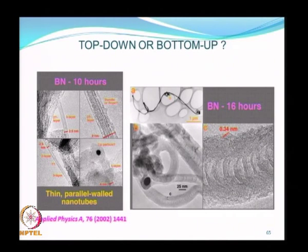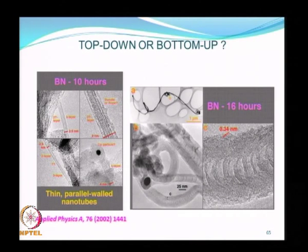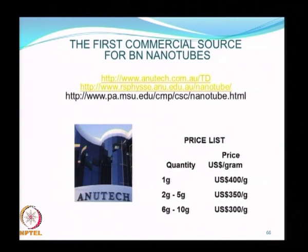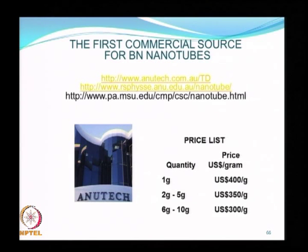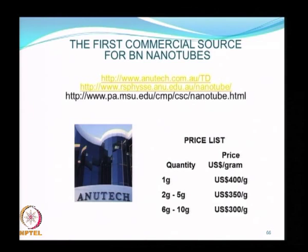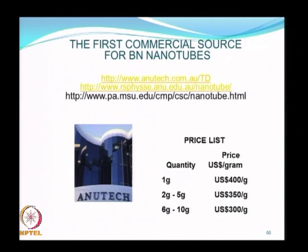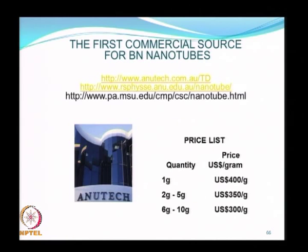Boron nitride nanotubes can be produced using this combined process; the nanostructure resulting after 10 hours and 16 hours of processing can be seen in TEM images. High energy ball milling combined with thermal annealing was in fact the first commercial process used for production of boron nitride nanotubes. Cost-wise, this is very competitive with bottom-up approaches—prices are listed per gram of material—and making the same materials using a bottom-up process could cost at least 3 to 4 times as much.